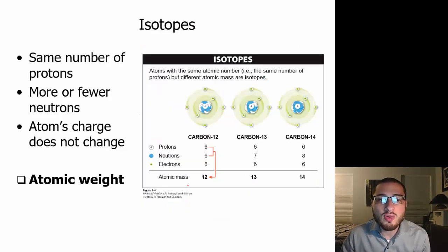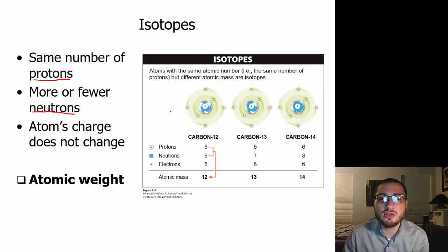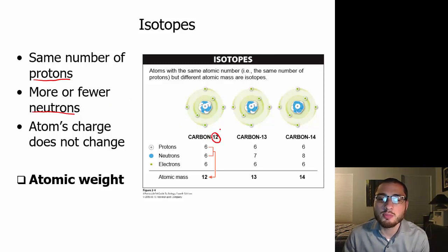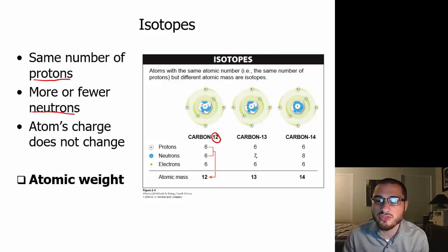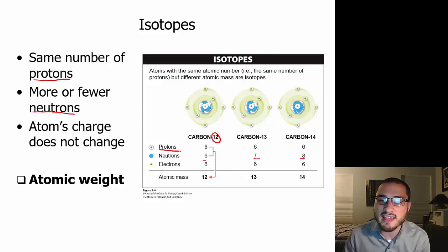There are also isotopes, which have the same number of protons — making them the same element — but a different amount of neutrons. In this example they show you carbon: it has six protons, which makes it carbon, but a different amount of neutrons. So you can have carbon-12 with 6 neutrons, carbon-13 with 7 neutrons, and carbon-14 with 8 neutrons. They're all carbon because they all contain the same number of protons, and the atom's charge does not change.